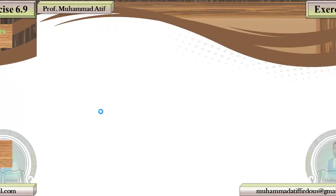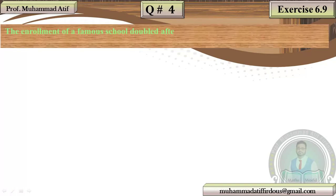Next, question number 4: The enrollment of a famous school doubled every 8 years from 1970 to 1994. If the enrollment was 6,000 in 1994, what was its enrollment in 1970? A school's enrollment doubled every 8 years. If there were 6,000 students in 1994, you have to find the enrollment in 1970 when it started.